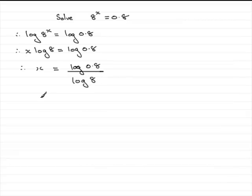And if you do that on your calculator you should find that you get x equals minus 0.1073 and so on. And if we round this to three significant figures as requested that comes out at minus 0.107 to 3SF.